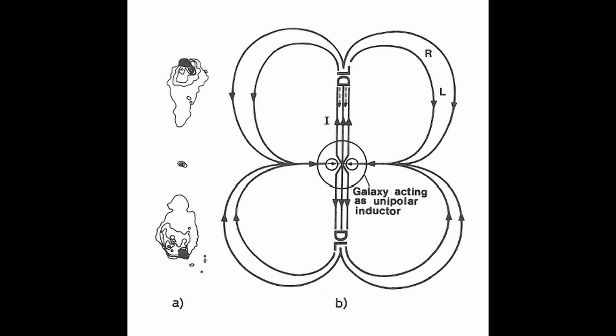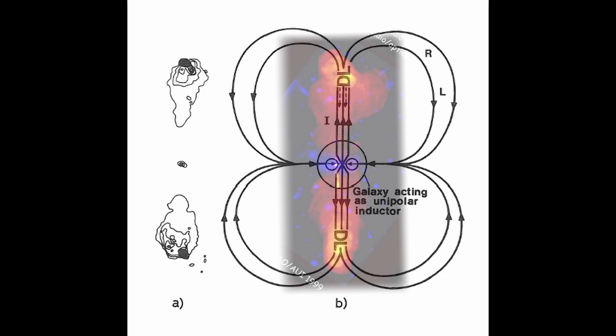Hannes Alfvén viewed that these radio lobes were formed by a double layer which had to be part of what he called the galactic circuit. Protons would flow out along the axis and would become accelerated in a double layer. From here the current would loop back around and flow back in along the plane of the galaxy. Electrons will be drawn into this double layer from the surrounding and be accelerated back towards the galaxy. It is these electrons that create the lobes that we can see.